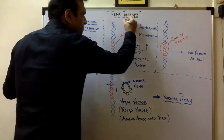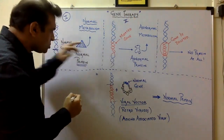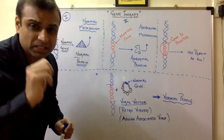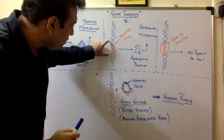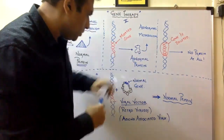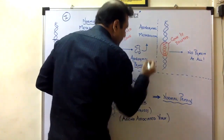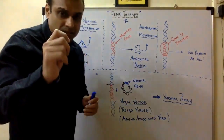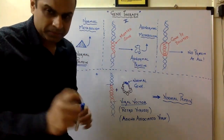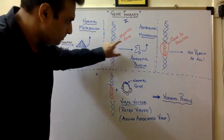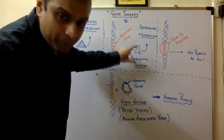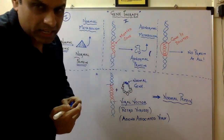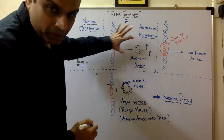In case 2, the same gene is mutated. Mutations are nothing but sudden changes. If the gene is mutated, it produces an abnormal protein, and this abnormal protein leads to abnormal metabolism. For example, consider sickle cell disease — if the gene is mutated, the abnormal protein causes formation of sickle-shaped RBCs, leading to sickle cell anemia.